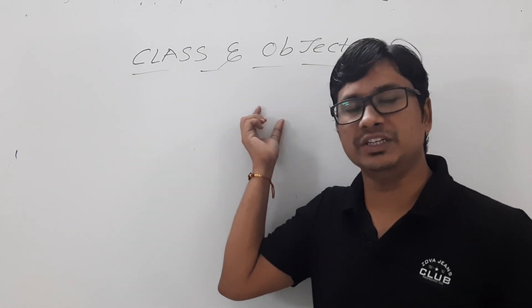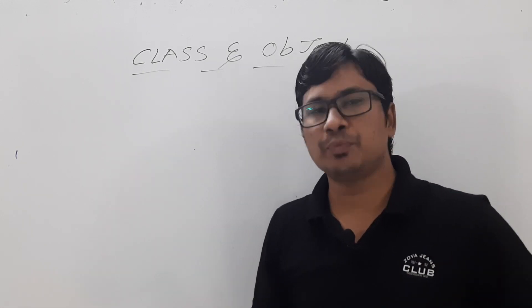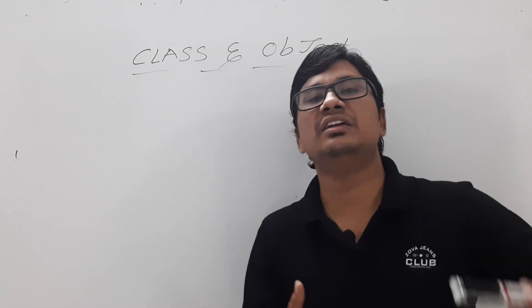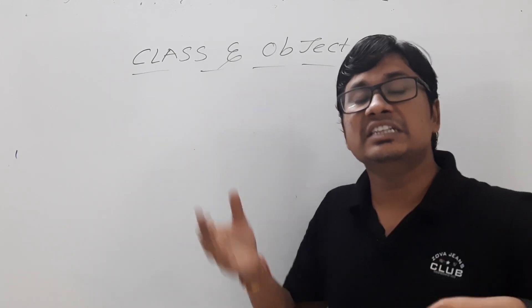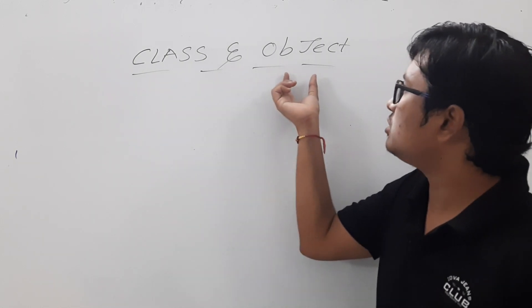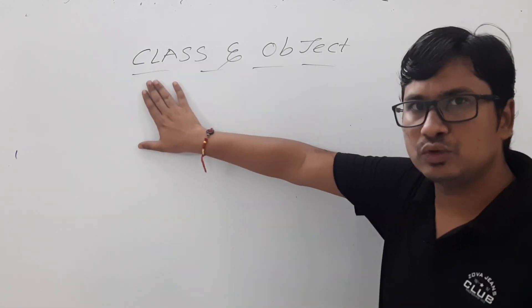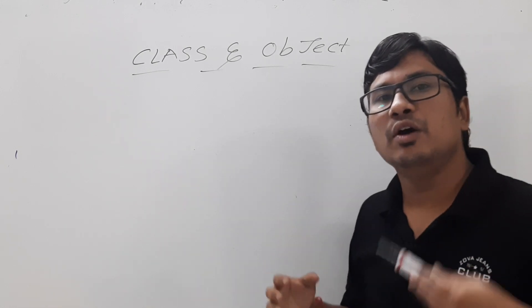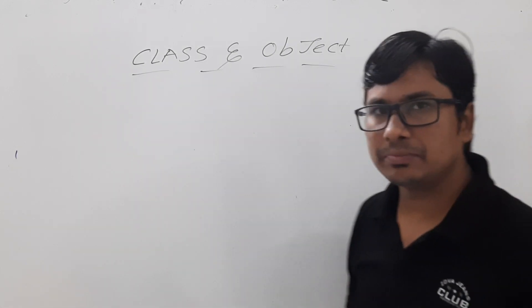A class is a blueprint for an object and it is imaginary — once you create a class, memory will not be allocated. Those who have studied C programming would know what a structure is; if you create a structure, memory will not be allocated unless you create a variable for it. Similarly, an object is an instance of a class — it is a real one. Once you create an object for the class, then only memory will be allocated. The object is useful for you to access the members and variables of the class.